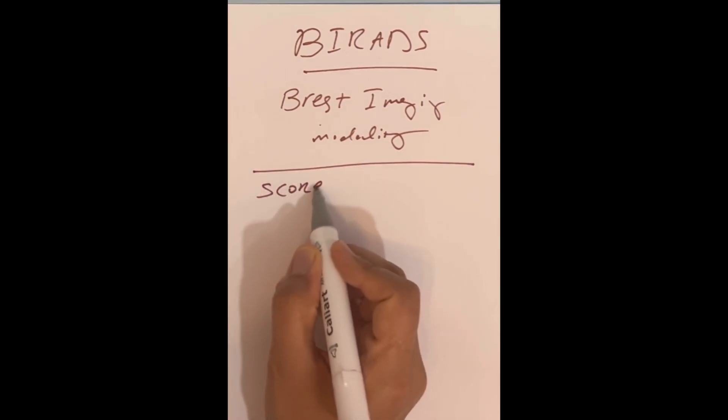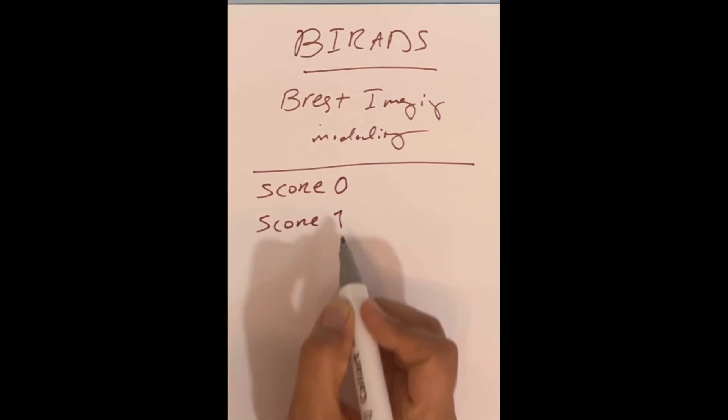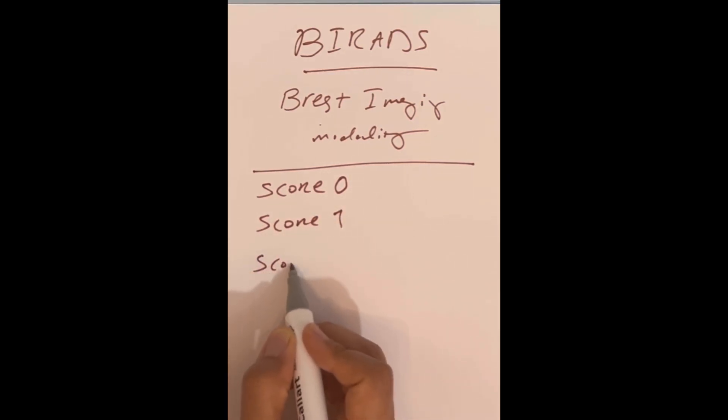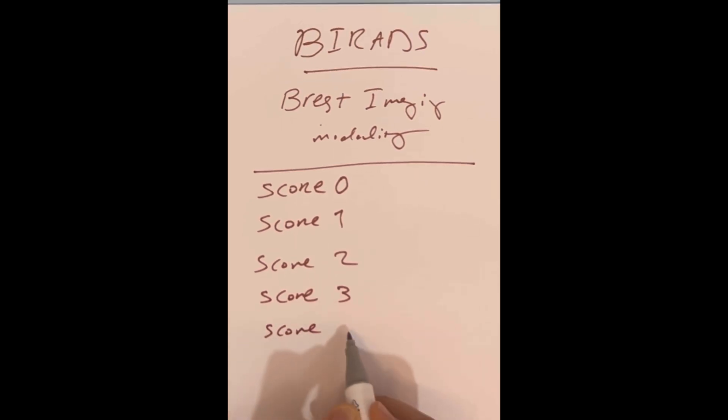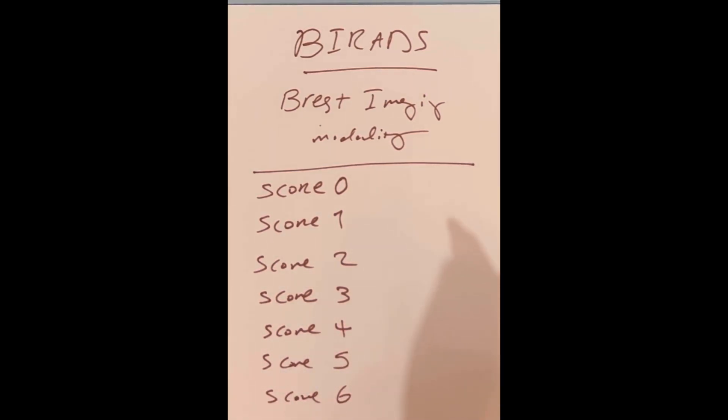Score 0, Score 1, Score 2, Score 3, Score 4, Score 5, and Score 6. What do they mean?